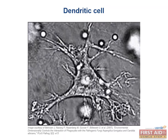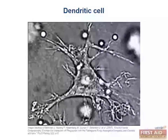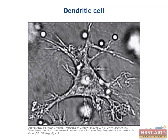Dendritic cells are the main inducers of primary humoral immunity, also known as the antibody response. Dendritic cells are called Langerhans cells when located in the skin. Remember this when you hear about Langerhans cell histiocytosis, commonly known as histiocytosis X. On the electron micrograph, you will see the characteristic Birbeck granules that are shaped like tennis rackets.